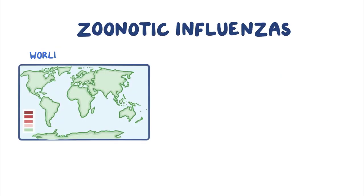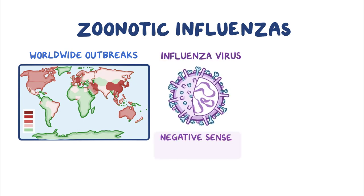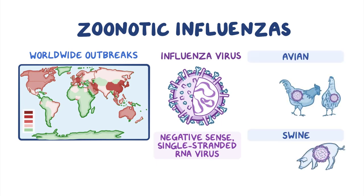As a quick recap: zoonotic influenza spreads around the world in outbreaks and is caused by influenza viruses, which are negative-sense single-stranded RNA viruses. The most common types are avian and swine, caused by type A influenza viruses. Common subtypes include H1N1 and H3N2 that cause swine flu, and H5N1 that causes avian flu.